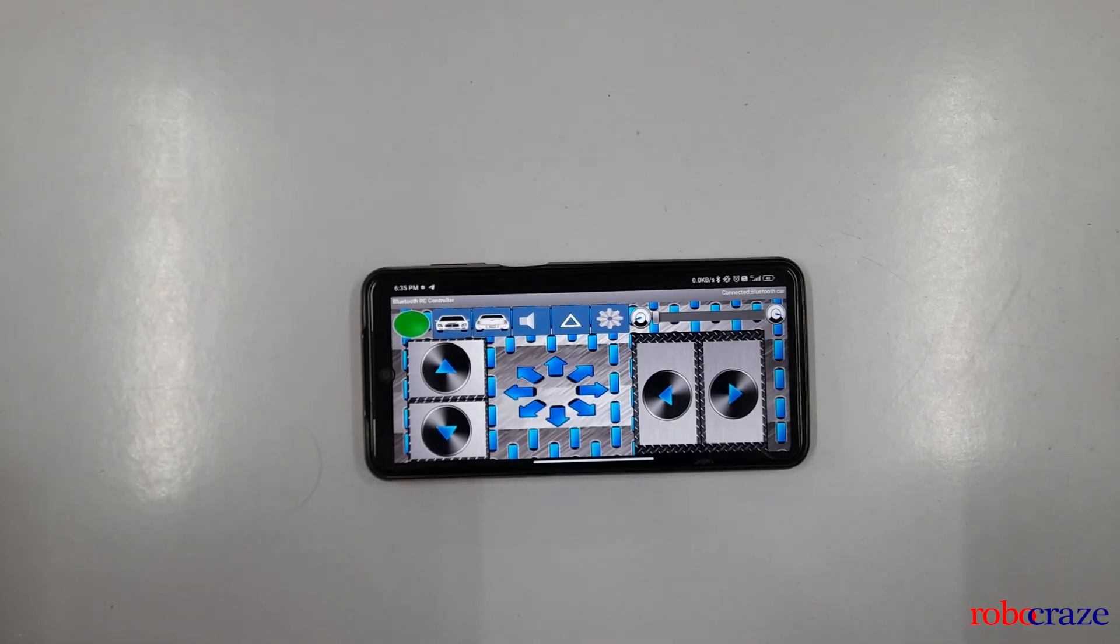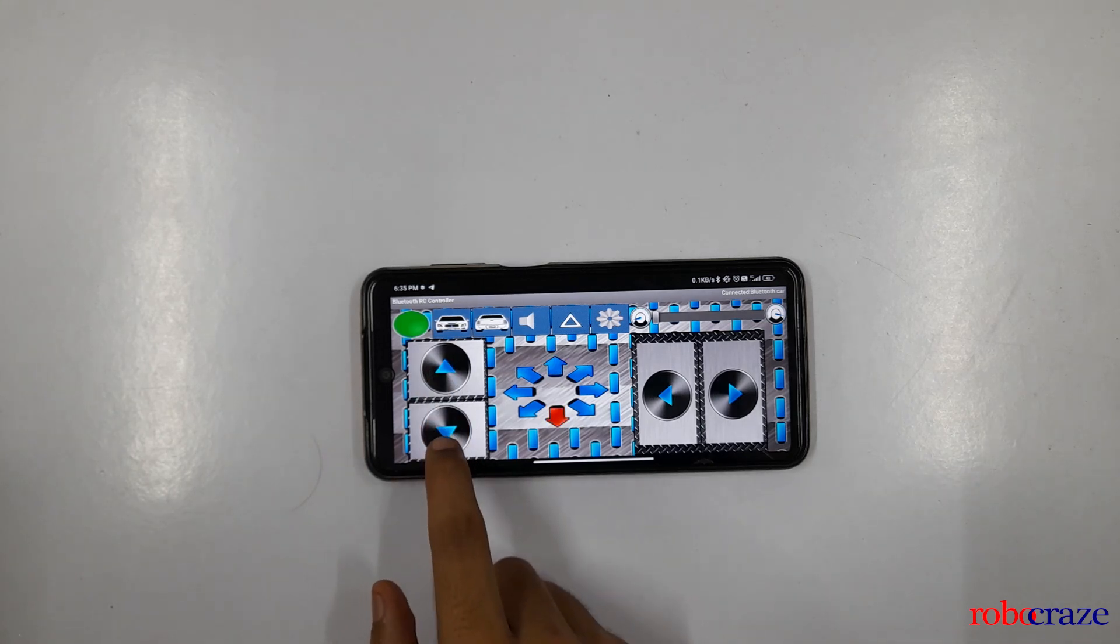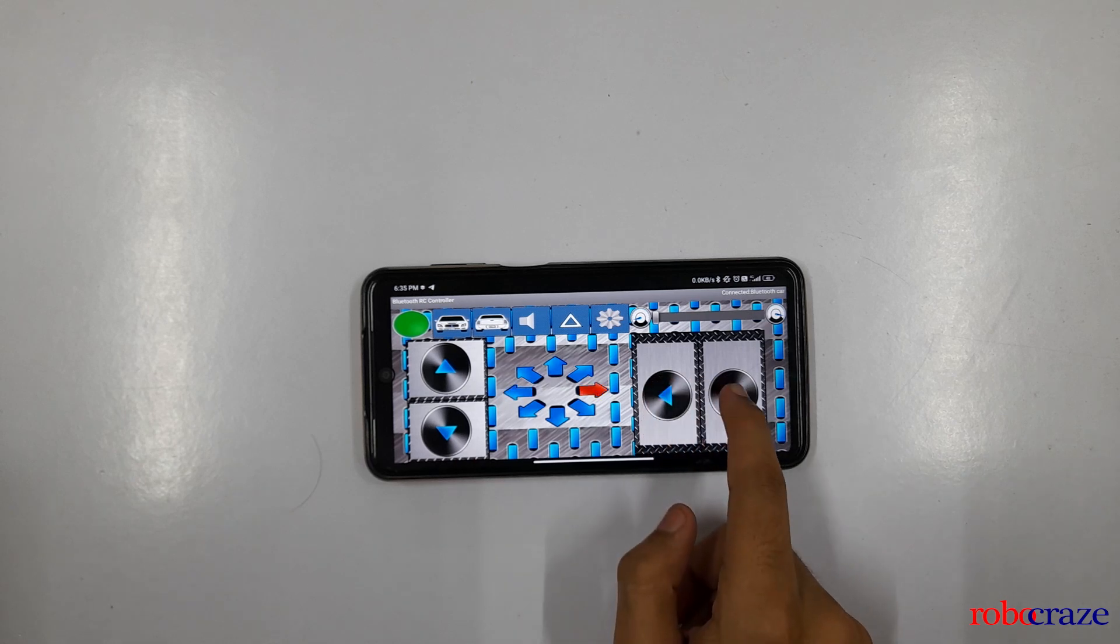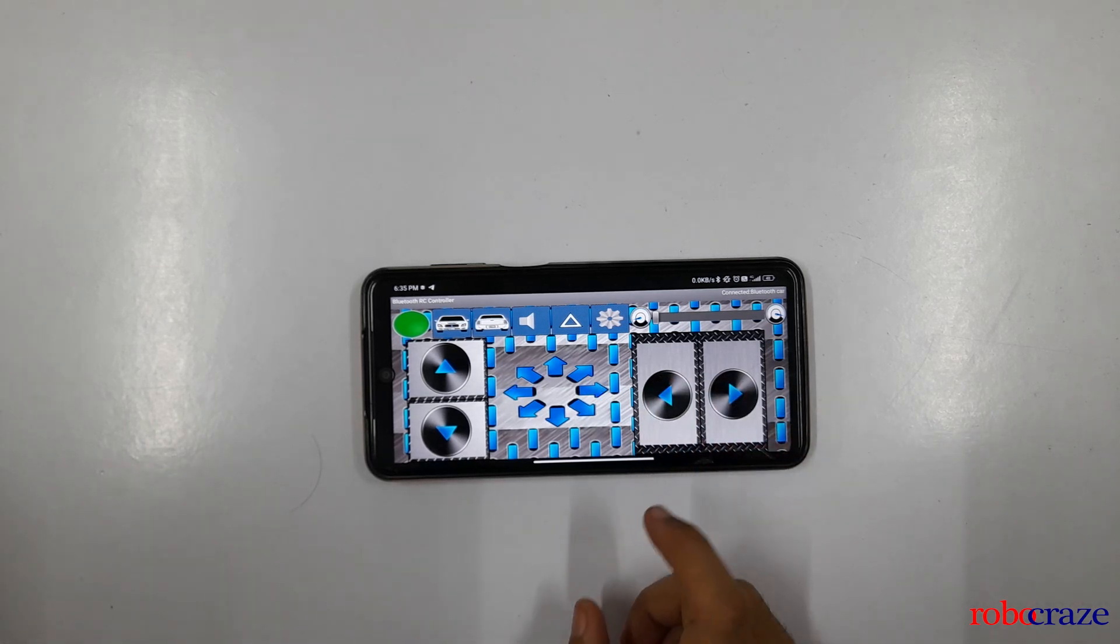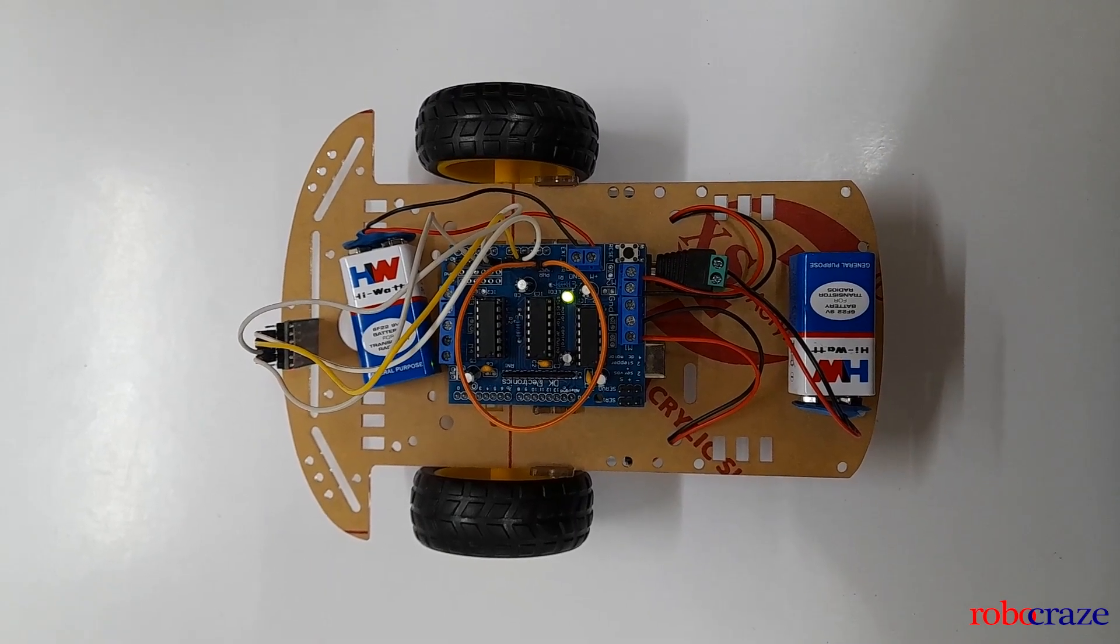Now let's try using the bot. From the interface as you can see we have various buttons for controlling the direction. Some basic buttons which we will be using are forward, backward, right and left. So this is about the app which we will be using.